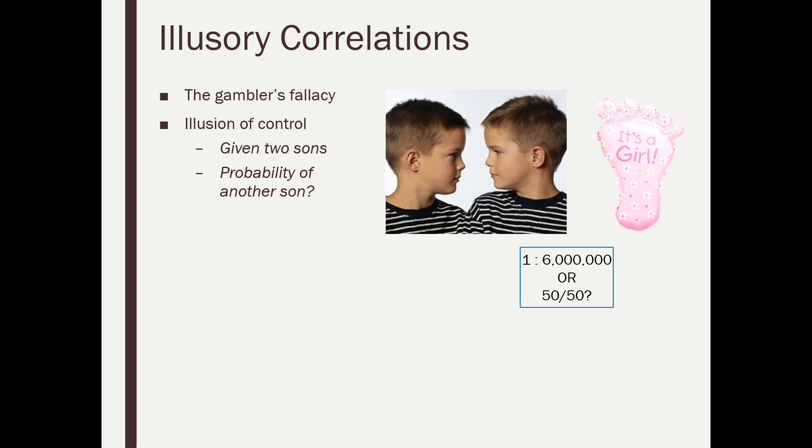So he went to all this work, calculated it out, came to the conclusion it was one in six million when all he needed to really do is say to himself, it's a 50/50 shot each time.